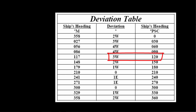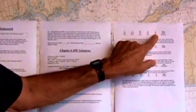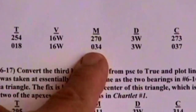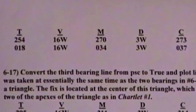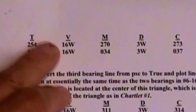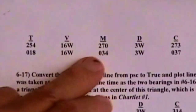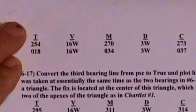That three degrees west applies to both bearings. This is a vital point that many people get fouled up on — they try to look up the deviation correction based on the bearing rather than the boat heading. Deviations are predicated on boat heading. These are westerly, and traveling right to left, a westerly correction is a subtraction. So 273 minus 3 west equals 270 magnetic; 037 minus 3 west equals 034 magnetic. We already calculated variation as 16 west — that's also a subtraction: 270 minus 16 equals 254 true, and 034 minus 16 equals 018 true.